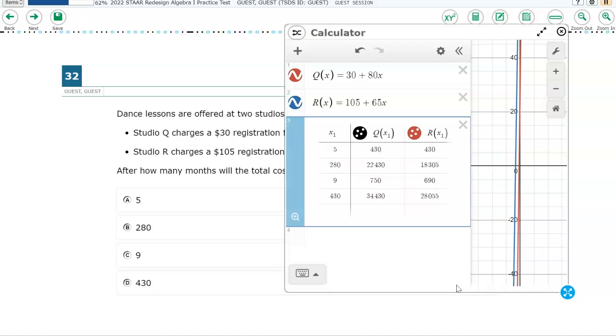So the question is, after how many months would the total cost be the same? And if you will notice, the only two that are the same is for five. When X1 was five, both outputs were 430. So the correct answer in this case is five.